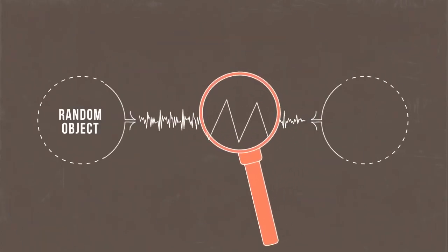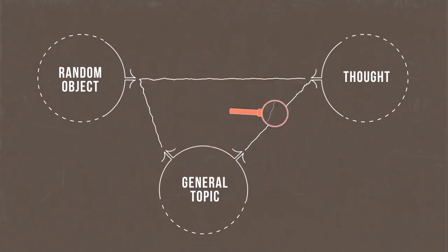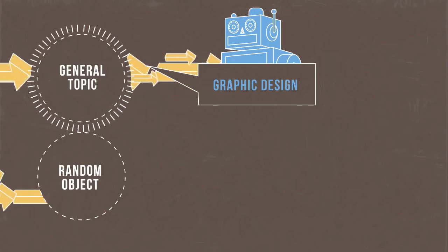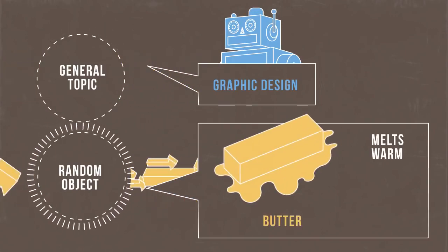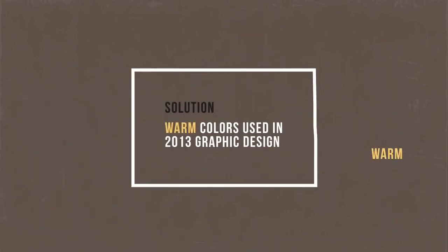Randomness: Find the connection between a random word or thought and a general topic to develop a new creative idea. First, start with a general idea. Next, generate a random object and list words that can describe it or are associated with it. Last, pick the words from your list that can relate back to your general idea to form your solution.